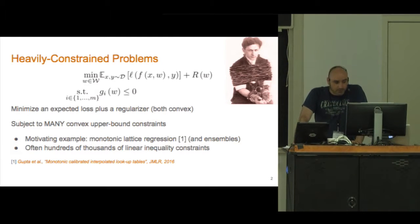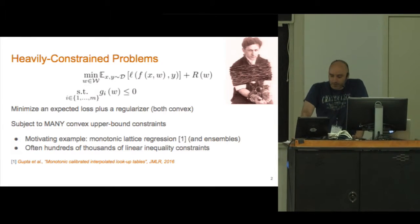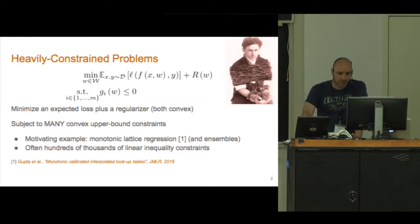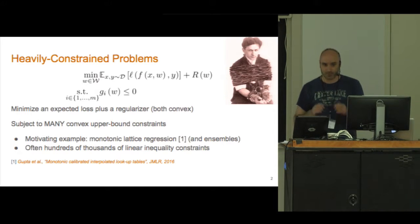To be more precise, we're considering the problem of trying to find a model that minimizes some expected loss with respect to some unknown distribution plus a convex regularizer subject to a large number m of convex constraints.